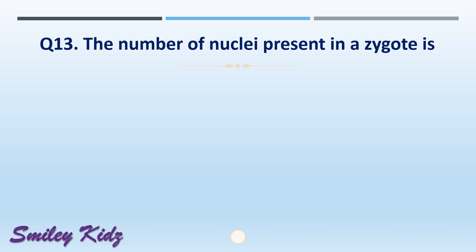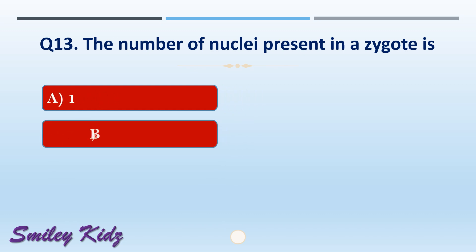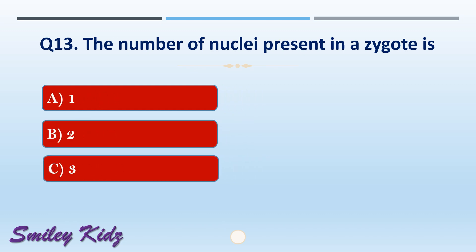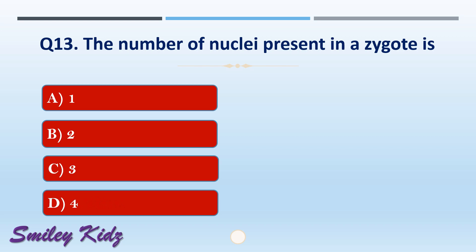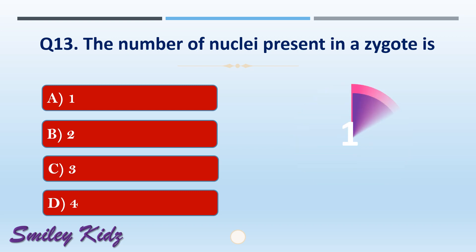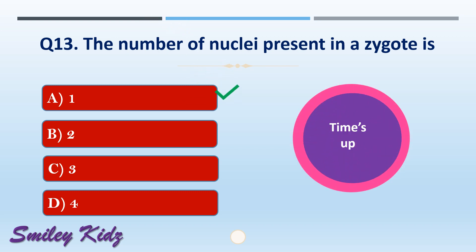Question number thirteen: the number of nuclei present in a zygote is dash. The options are: A) one, B) two, C) three, or D) four. The right answer is option A, one. The number of nuclei present in a zygote is one.